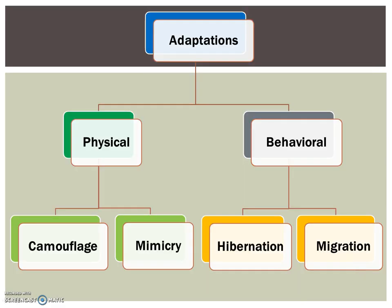A characteristic is a structure, behavior, or ability that distinguishes an individual organism or group of organisms from others. These characteristics are known as adaptations and represent either physical or behavioral adaptations. Some specific examples of physical adaptations include camouflage and mimicry. Some specific examples of behavioral adaptations include hibernation and migration, which we will take a closer look at.